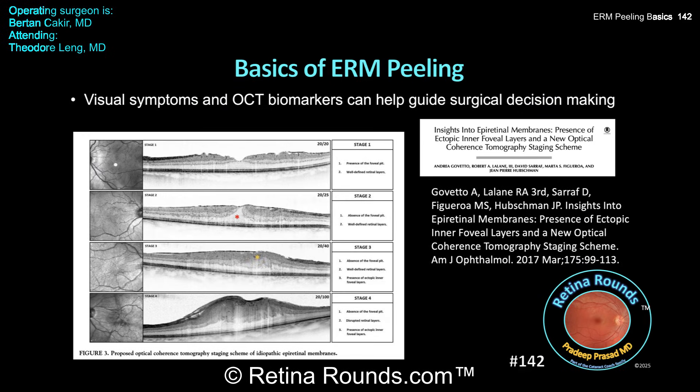Some points for discussion: first, how we decide whether or not to operate on an epiretinal membrane. The surgeon should take into account multiple factors — the severity of visual symptoms including blurred vision and metamorphopsia, and how much these symptoms interfere with the patient's day-to-day life. Patient symptoms should be correlated with anatomic findings; if there's a disconnect, other causes of vision decline should be investigated. Trends over time can help determine the appropriate time to intervene surgically. In this article by Andrea Govetto and colleagues from the AJO in 2017, a new staging system for epiretinal membranes was presented.